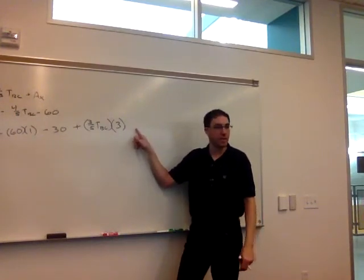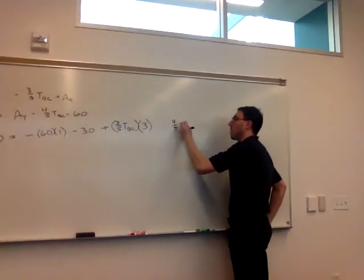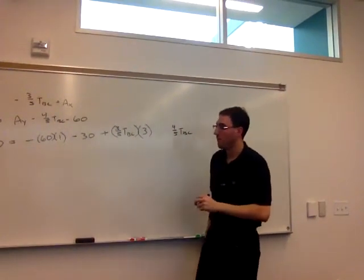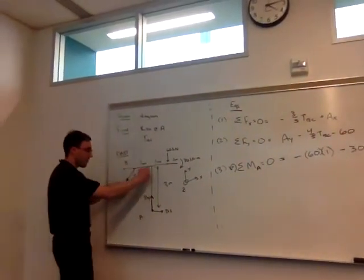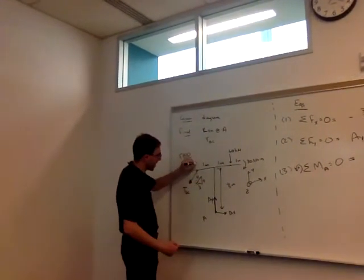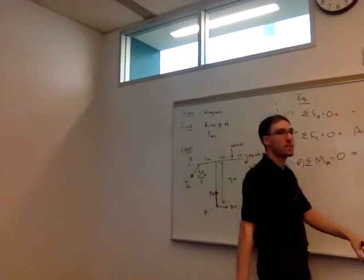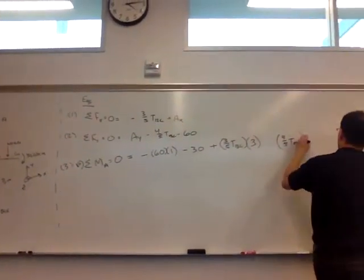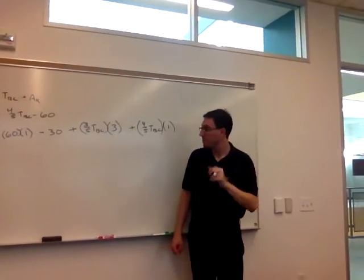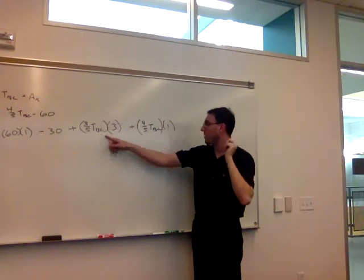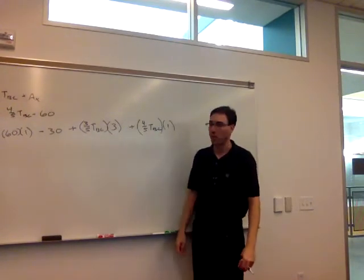And then what else do we need in equation 3? Well, we need both of them. The 4/5 is going to be the vertical component, so that is going to have a perpendicular distance. Its line of action is 1 meter from A, so 4/5 TBC times 1, and that also causes a positive moment around point A. So equation 3, we have TBC in it twice, but there is only one unknown in equation 3.